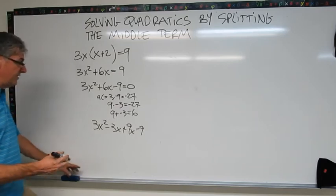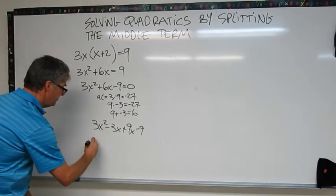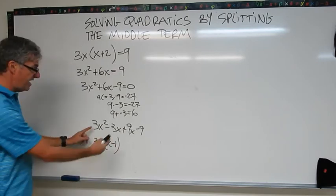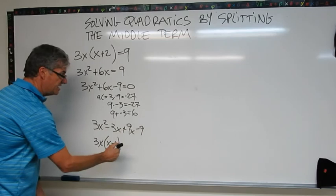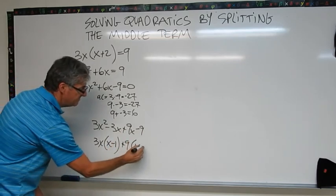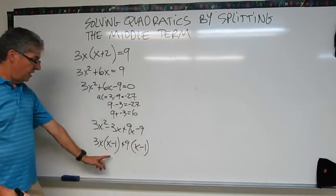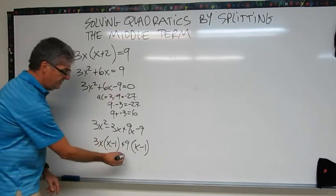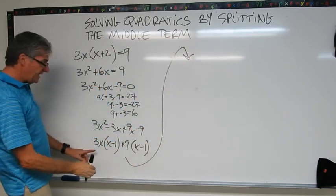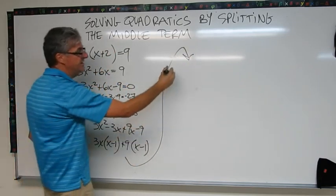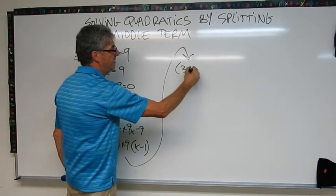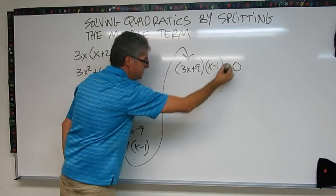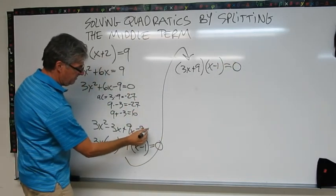There's a 3x in both of these. So 3x times (x minus 1). That's the factoring of these two. Here I've got a 9 in both. So plus 9 times (x minus 1). Again, so we're in the right place because we notice our two binomials are the same. So my last step is going to be 3x plus 9 times x minus 1 equals 0.